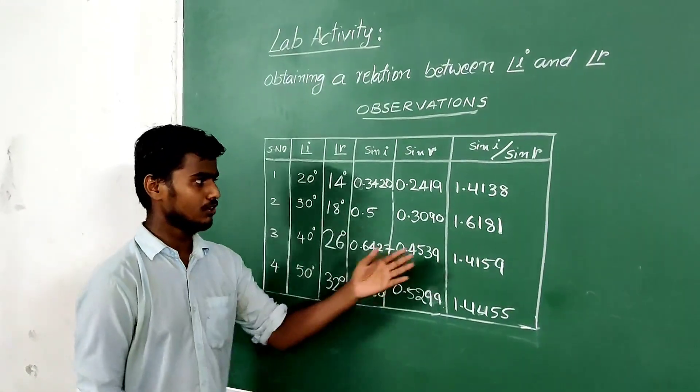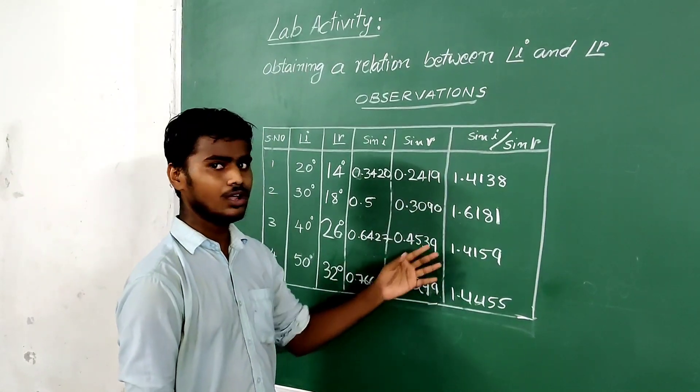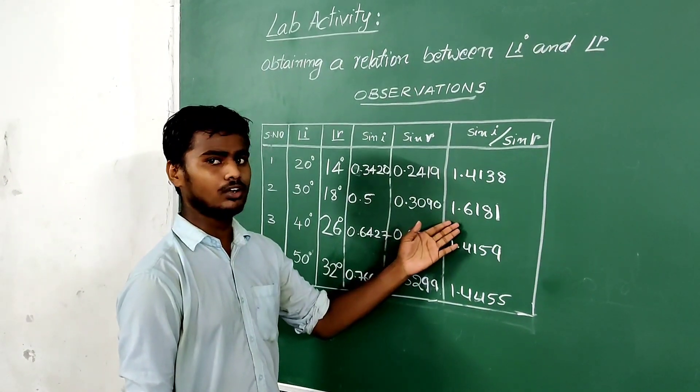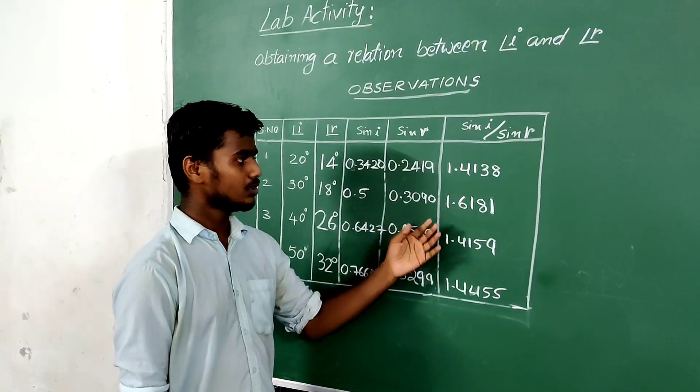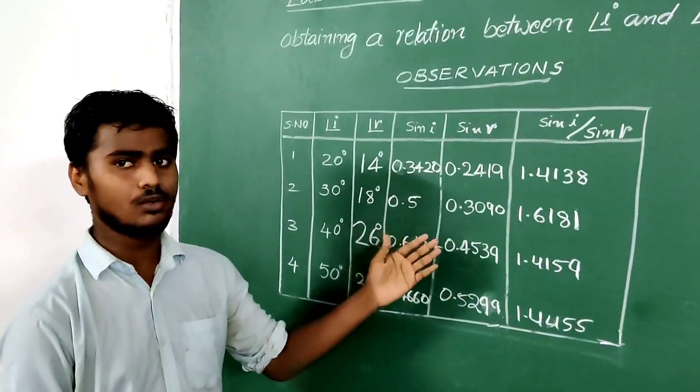From these we get the values as follows. All sin i by sin r values are constant. But in the second one we got an error in the practical. So finally we can conclude that sin i by sin r is constant.